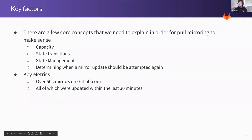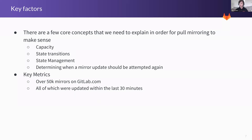There are a couple of key factors that make this feature work: capacity, transition of state, state management, and determining when a mirror update will be attempted again. Some key metrics: on GitLab.com, we have over 50,000 mirrors being updated within the last 30 minutes — it's a pretty large scale.